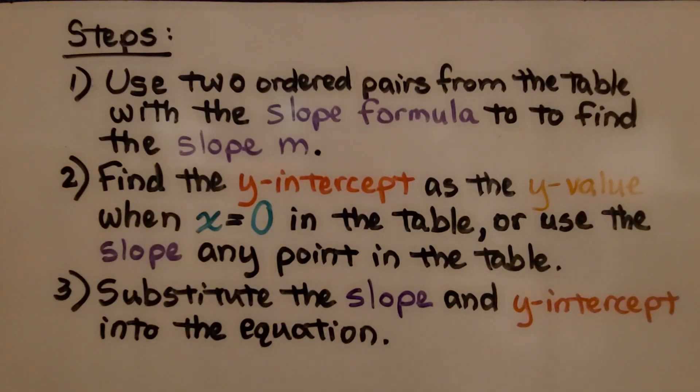To write an equation in slope-intercept form from a table, these are the steps. Use two ordered pairs from the table with the slope formula to find the slope m. Find the y-intercept as the y-value when x equals 0 in the table, or use the slope and any point in the table. Substitute the slope and y-intercept into the equation.